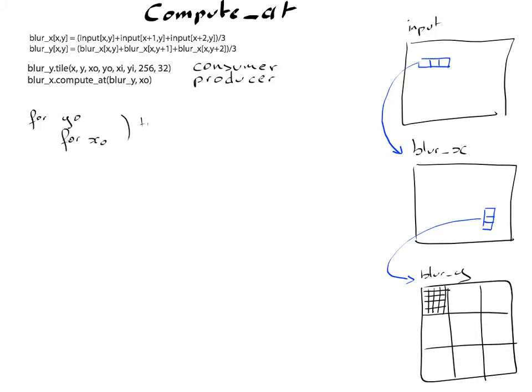So these are the tile indices. And now we need to generate the loops for the inside of the tile, so we are going to have a for yi and a for xi.